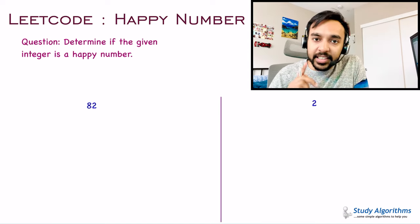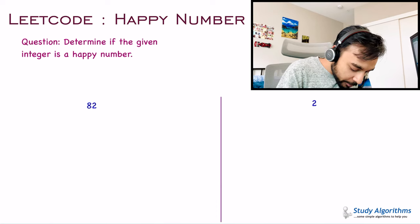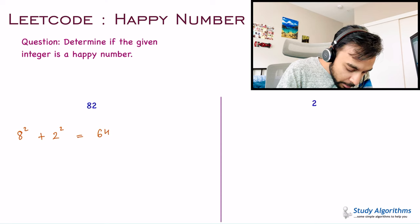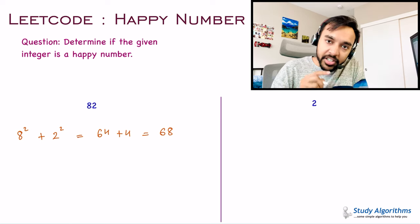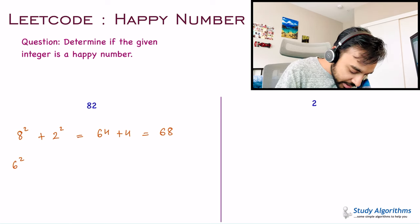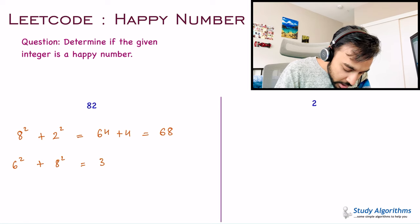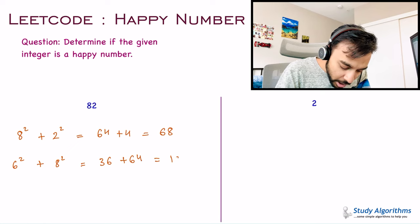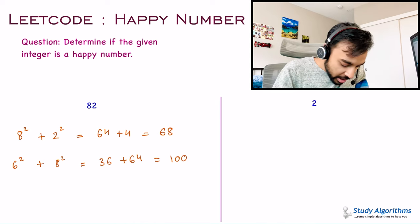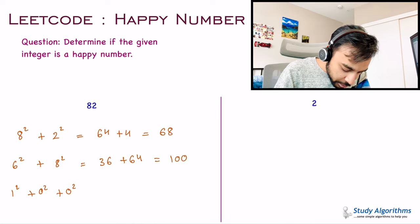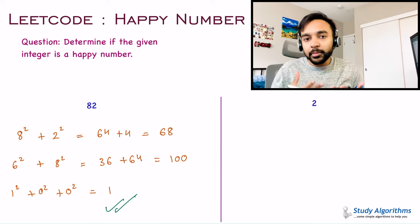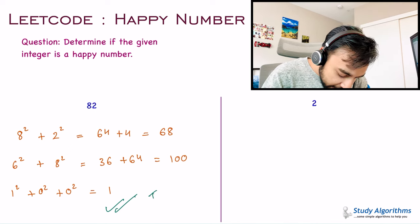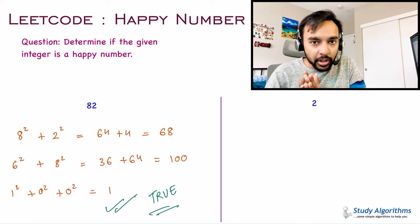Let us look at our first test case: the number 82. You take 8 and square it, then take 2 and square it. That gives you 64 plus 4, which equals 68. This is not yet 1, so you take the digits again and square them. This time you get 6² plus 8², that is 36 plus 64, which gives you 100. Now squaring its digits: 1² plus 0² plus 0² gives you 1. And that is where you stop, because no matter how many times you square 1, you will still get 1. So 82 is a happy number and you return true.